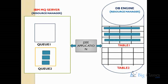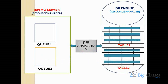On IBM MQ server, business data is stored as messages. On the DB engine, business data is stored as records. On IBM MQ server, business data storage is temporary. On the DB engine, business data storage is permanent. On IBM MQ server we have queues to hold business data; on the DB engine we have tables. On tables, business data is stored as records permanently. On queues, business data is stored as messages temporarily. If you compare IBM MQ server with a database, it is easy to understand.